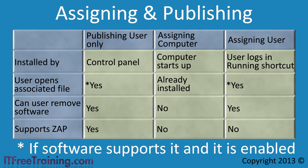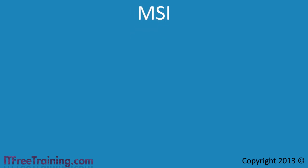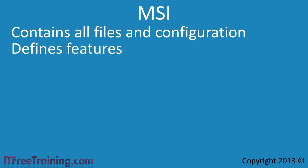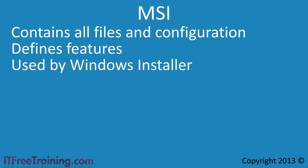The modern way to install software is using the Windows installer, which provides a standardized way to install software. With a standardized way to install software, there are also standardized file formats. The first file format is the MSI format. The MSI format contains all the files and configurations for the application. MSI files define the features available in the application and additional information like which shortcuts should be created and where. It is essentially a small database containing all the information the Windows installer will need to install the application.